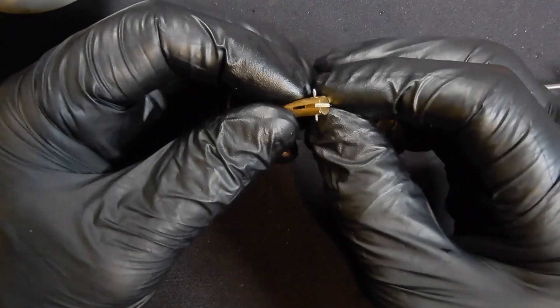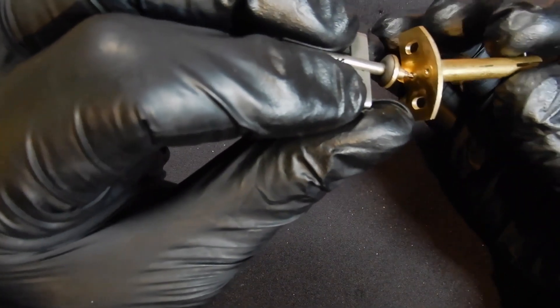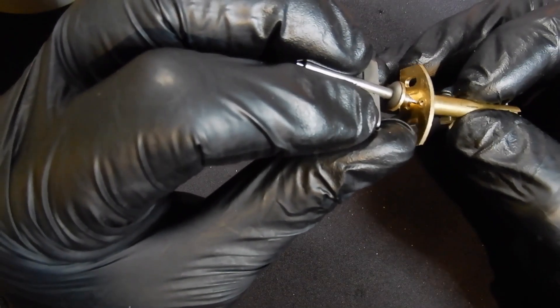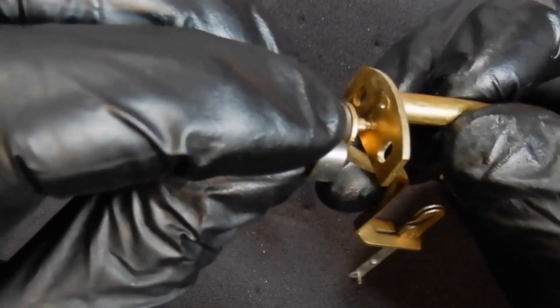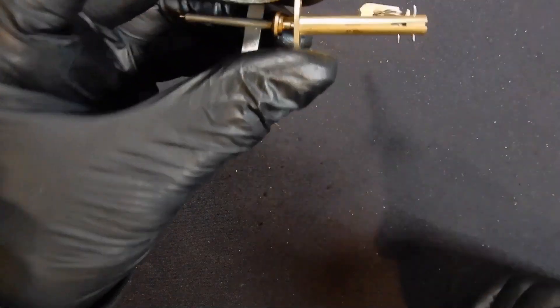What we do now is put the pendulum leader into the suspension spring and then align the pivot into its bush there. That's got him, all right. And now the back cock is ready to go into the movement.